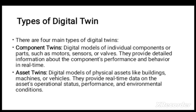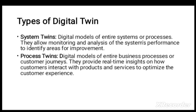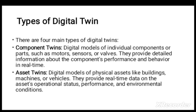Moving toward the types of digital twins: there are four main types — component twins, asset twins, system twins, and process twins. Component twins are digital twins of individual components such as a motor, sensors, or valves. They provide detailed information about the component's performance and behavior in real time.